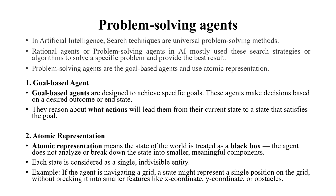Atomic representation means the state of the world is treated as a black box. The agent does not analyze or break down the state into smaller or meaningful components. Black box means the internal working is not known to us — we only know the current state, not the internal workings. Each state is considered as a single indivisible entity.